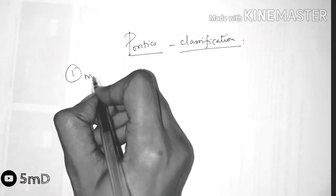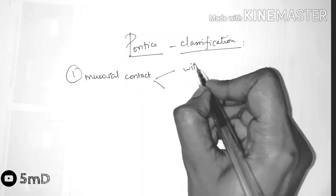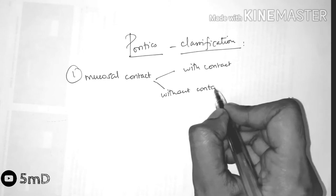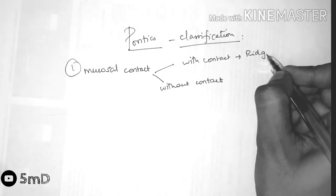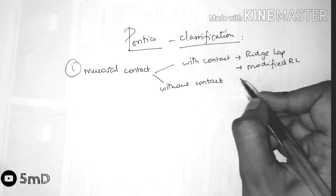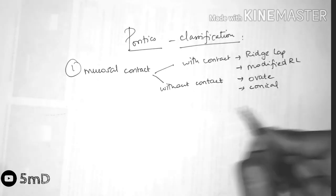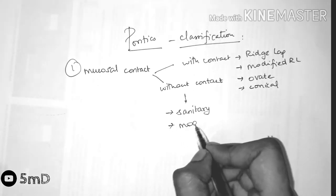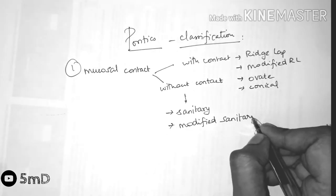Now as we saw, pontics are the artificial teeth which replace the missing natural teeth. Let us see the classification of pontics. Depending on the mucosal contact, with contact and without contact, we have different types. In with contact we have ridge lap, modified ridge lap, ovate and conical pontics. In without contact we have sanitary and modified sanitary pontics.